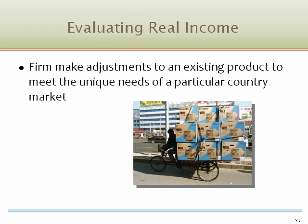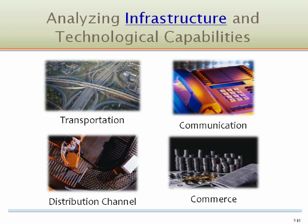Successful firms make their products accessible to average buyers, which in many countries means offering products in smaller portions that make them affordable. A firm's ability to conduct business in a particular country is in large measure determined by that country's infrastructure, defined as the basic facilities, services, and installations needed for a community or society to function, such as transportation and communications systems, water and power lines, and public institutions like schools, post offices, and prisons.